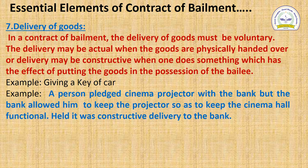The last essential element of the contract of bailment is delivery of goods. In bailment, delivery must be voluntary from bailer to bailee. This delivery may be actual or constructive. When the goods are physically handed over to the bailee, that is actual delivery — for example, giving a watch for repair or giving cloth to a tailor for making a suit. Delivery may be constructive when one does something which has the effect of putting the goods in the possession of the bailee. For example, a person pledged a cinema projector with the bank, but the bank allowed him to keep it so as to keep the cinema hall functioning — this is a constructive delivery of goods to the bank.